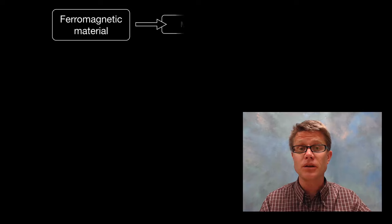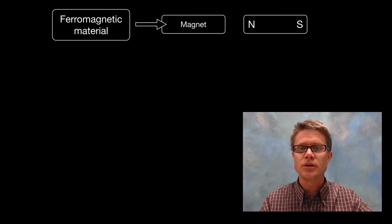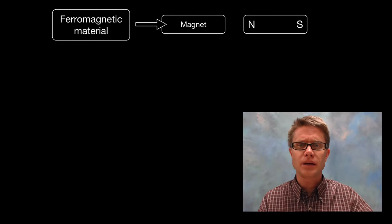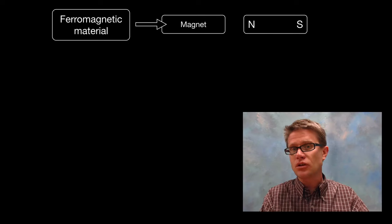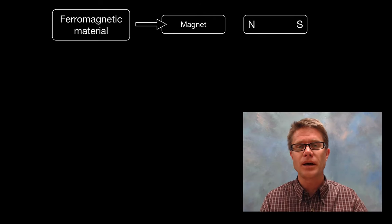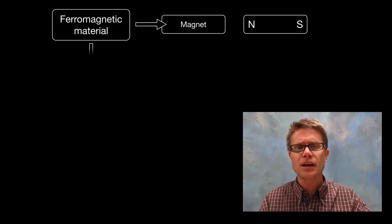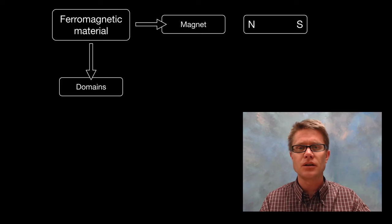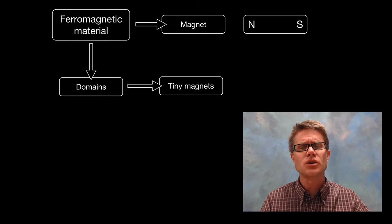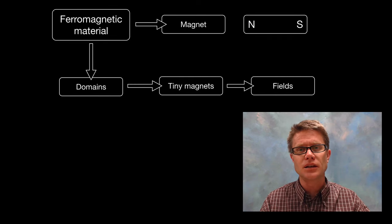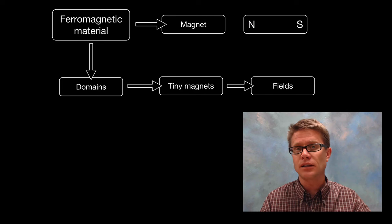If you have ferromagnetic material in the form of a magnet you're going to get a north pole and a south pole. You'll never have just a north pole by itself or a south pole by itself. But if we were to look inside that ferromagnetic material we would find that there are these magnetic domains, which you can think of as tiny little magnets and each of those tiny magnets have their own tiny little fields.